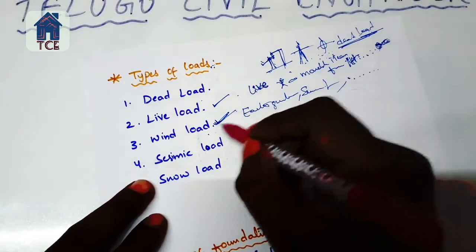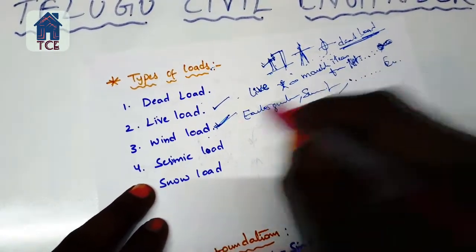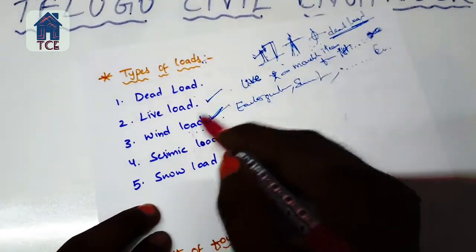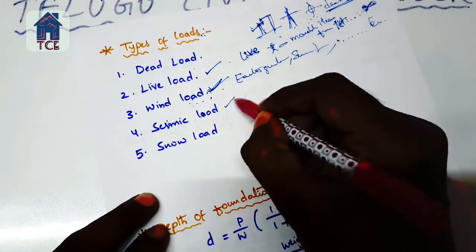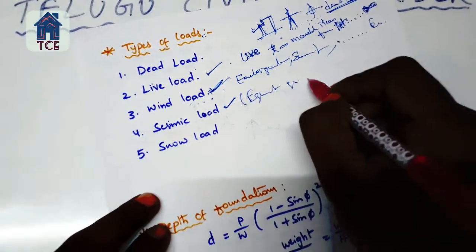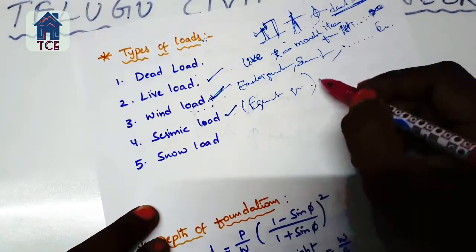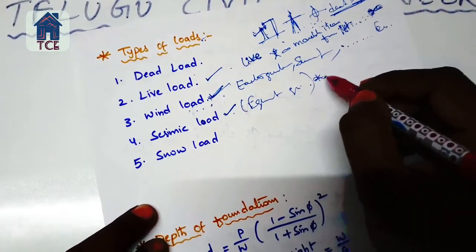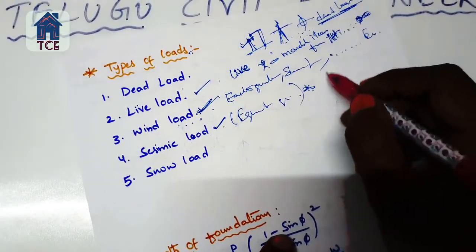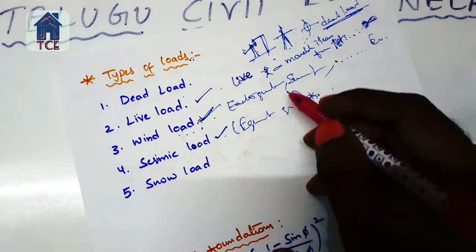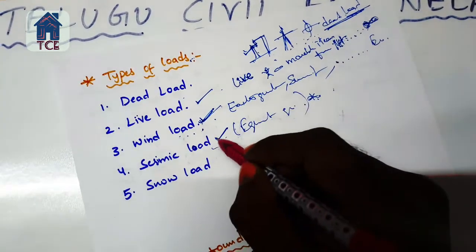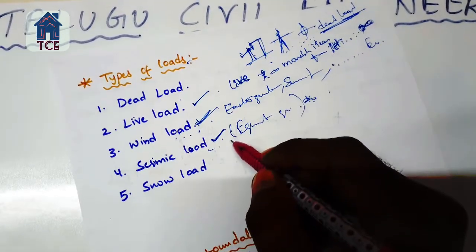Wind load acts on the structure from wind forces. Seismic load is from earthquakes. Earthquakes are designed for using seismic load calculations, which is important in places like China or Japan where earthquakes are common.